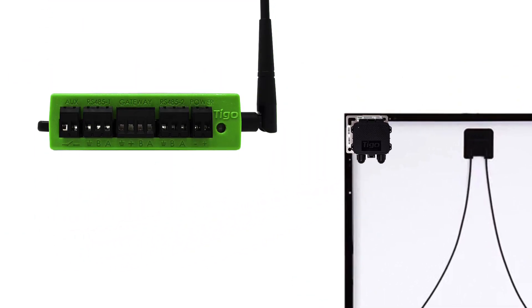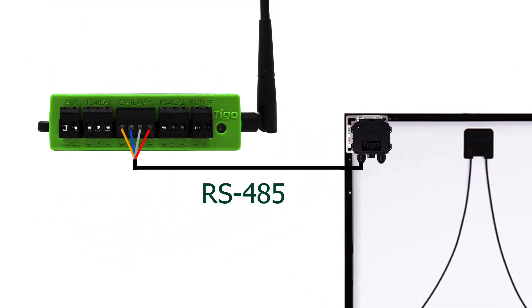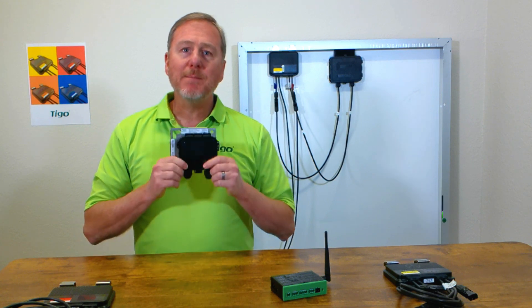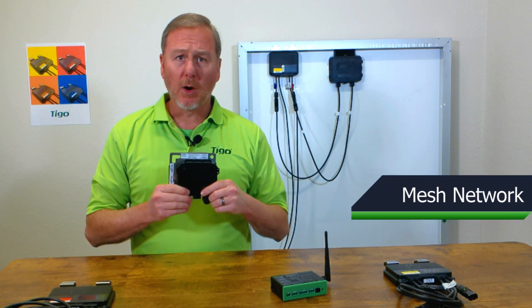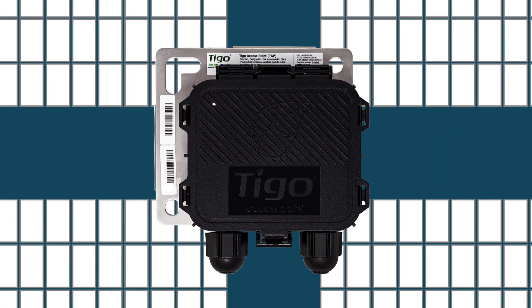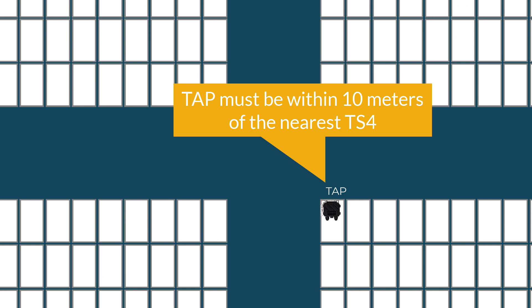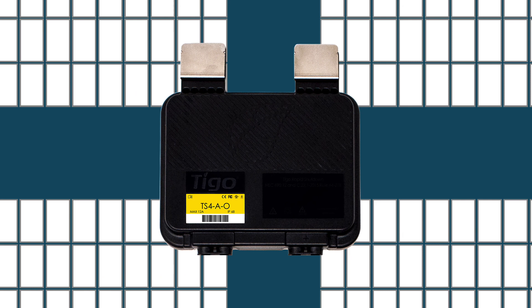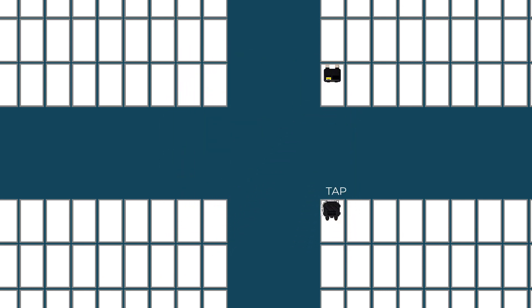The CCA will be mounted in a water-tight enclosure on ground level. They are connected together with an RS-485 cable. The TAP uses a mesh communication architecture, which means as long as a TAP is within 10 meters of a TS4, each TS4 in that mesh area will be able to communicate to this TAP.